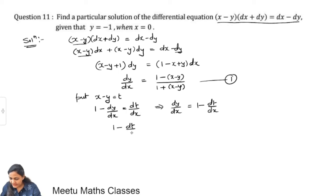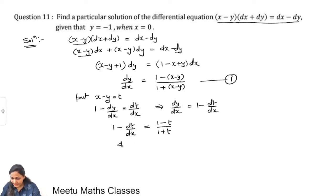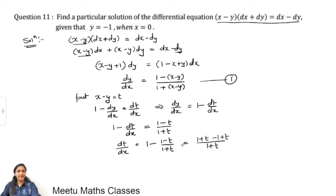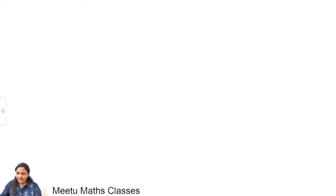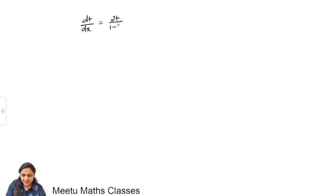Substituting dy/dx = 1 − dt/dx into the equation: 1 − dt/dx = (1 − t)/(1 + t). Rearranging: dt/dx = 1 − (1 − t)/(1 + t). Taking LCM as (1 + t): dt/dx = (1 + t − 1 + t)/(1 + t) = 2t/(1 + t).